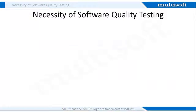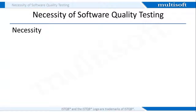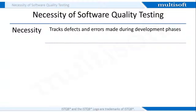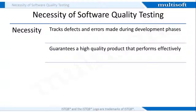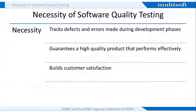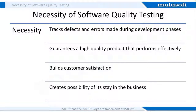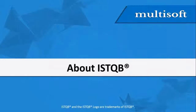Now that we are aware of what is software quality testing, let us find out why is it required. Firstly, it is required to point out the defects and errors that were made during the development phases of the software. This helps to ensure that the product is of high quality and hence builds satisfaction amongst customers. If a software is bug-free and performs effectively, there are much higher chances of that product to sustain in the market for long. Now let us expand our knowledge by gaining some information about ISTQB.